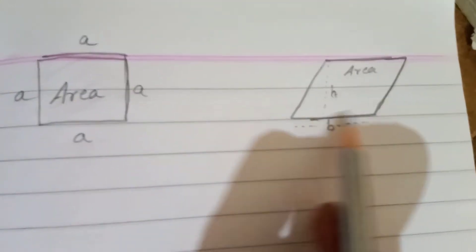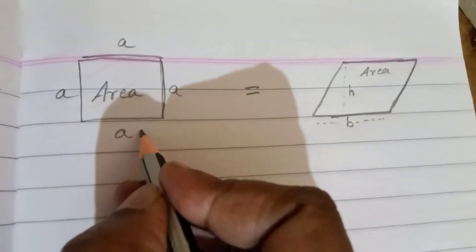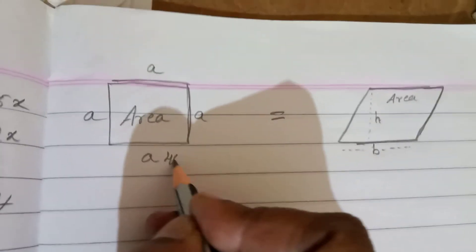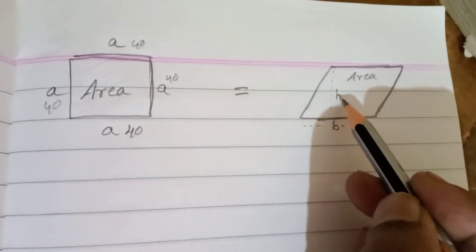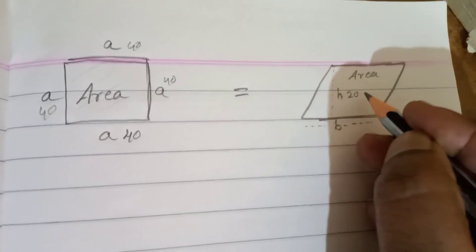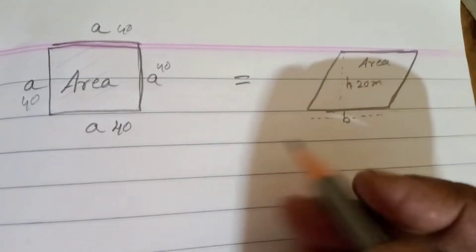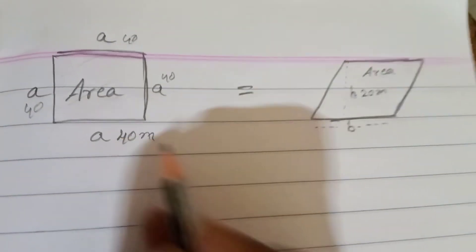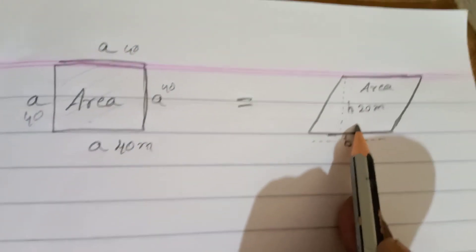See, area of square equals area of parallelogram. One side is 40, this is 40, this is 40, this is 40. This height is 20 meters, and this is 40 meters. This area is equal.